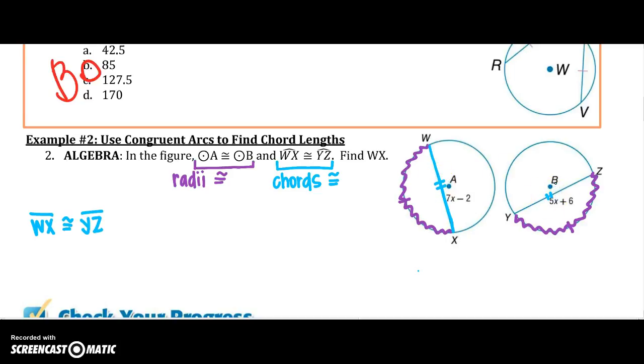So because they're congruent, I can say 7X minus 2 equals 5X plus 6. I can start solving for X, adding 2 to both sides, subtracting 5X from both sides. So those cancel, so I have 2X is equal to 8, so I know X equals 4.